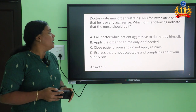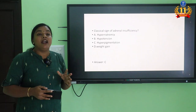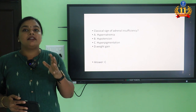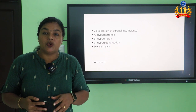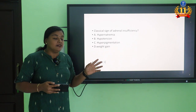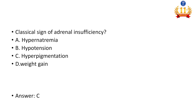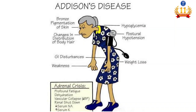Next question: classical sign of adrenal insufficiency. Adrenal insufficiency is Addison's disease — there is deficiency of mineralocorticoids, glucocorticoids, and corticosteroids. The options are hypernatremia, hypotension, hyperpigmentation, and weight gain. The answer is hyperpigmentation, which we see in Addison's disease.